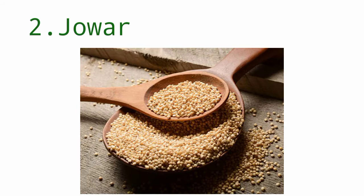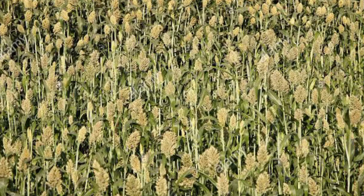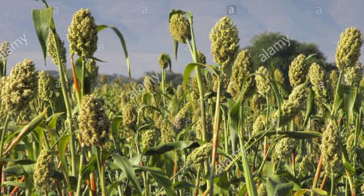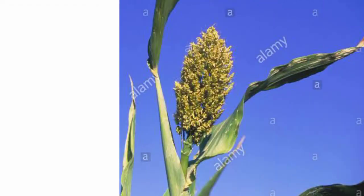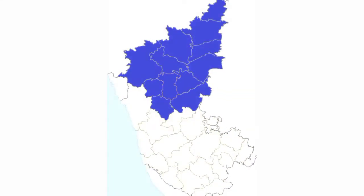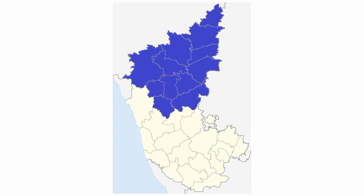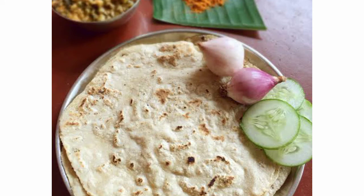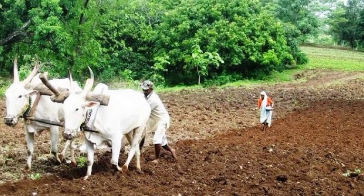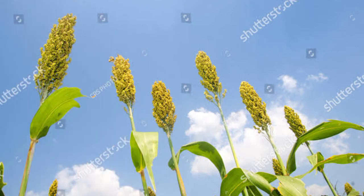The second most important crop in Karnataka after paddy is jowar. Until recently, the area under jowar cultivation was more than that of paddy, but in recent years it has decreased. The total area under jowar cultivation is 26 percent of the cultivable area. In production of jowar, Karnataka ranks second position after Maharashtra. Jowar is a staple food of the people living in North Karnataka, mainly used for preparing rotis, and jowar plants are used as cattle fodder. In South Karnataka, jowar is primarily grown for cattle feed.